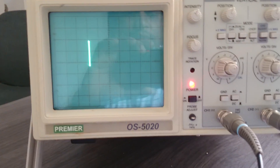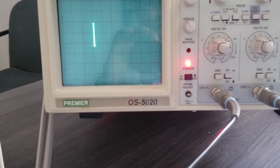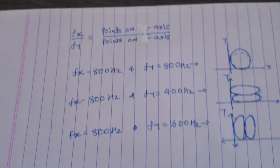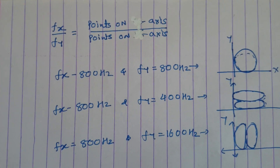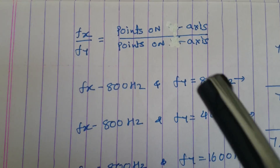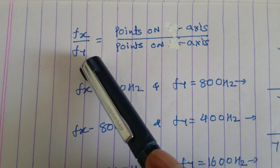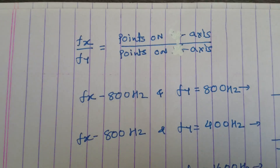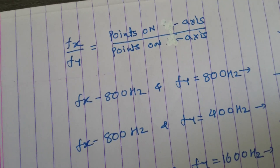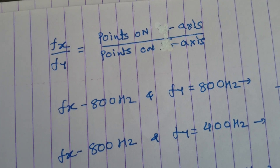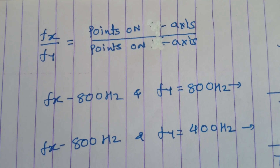Now here I am taking an unknown frequency on the X channel of a CRO, and a known frequency on the Y channel of a CRO. So the relation between the frequencies on a CRO can be explained by this: if FX and FY are the frequencies, we can find out their relation by the pattern on a CRO.